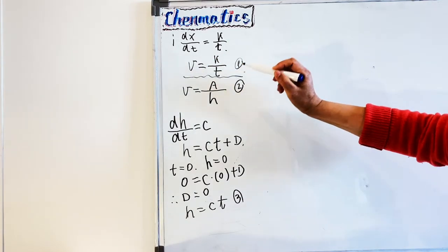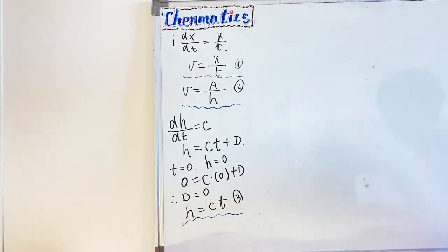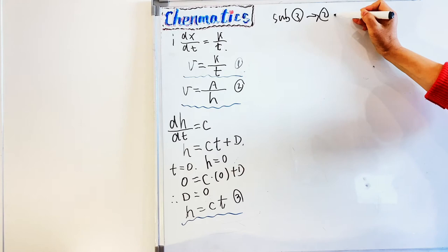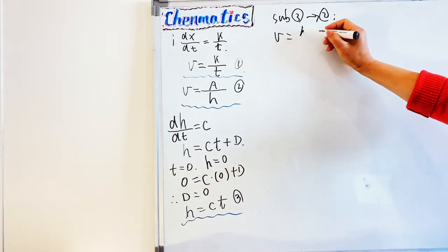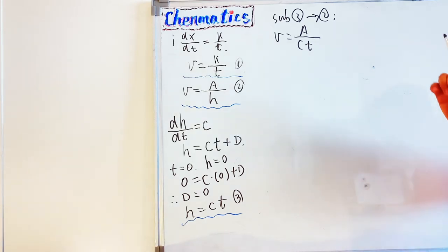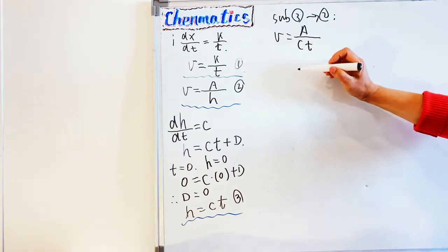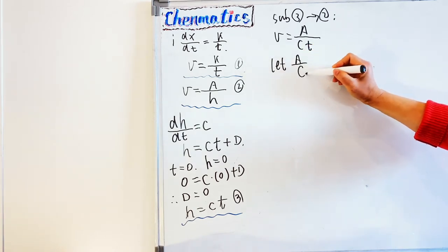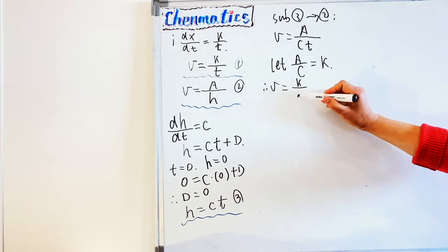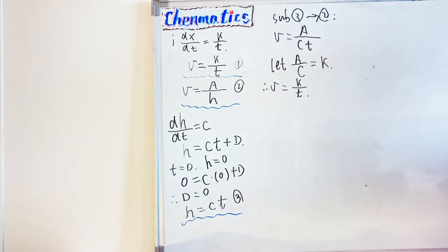Now we bring all three equations together to prove equation 1. We substitute equation 3 into equation 2: replacing h with ct gives velocity equals a over ct. Since a and c are both constants, we let a over c equal a new constant k. Therefore the velocity equals k over t — this proves that the velocity of the snowplow is inversely proportional to time.